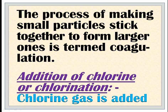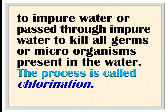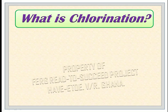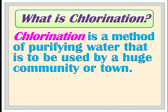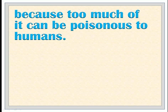Addition of chlorine or chlorination: Chlorine gas is added to impure water or passed through impure water to kill all germs or microorganisms present in the water. The process is called chlorination. What is chlorination? Chlorination is a method of purifying water that is to be used by a huge community or town. Note: It is not safe to add chlorine to water for small scale treatment, because too much of it can be poisonous to humans.